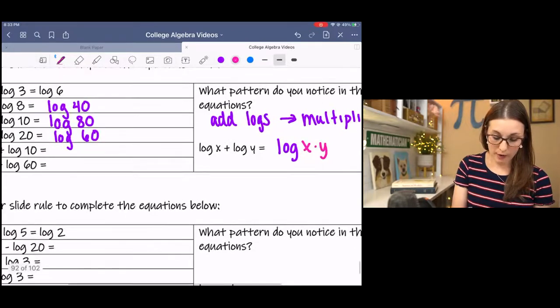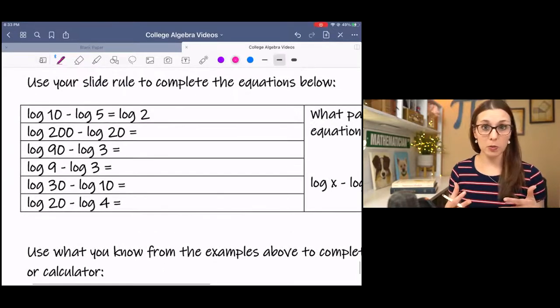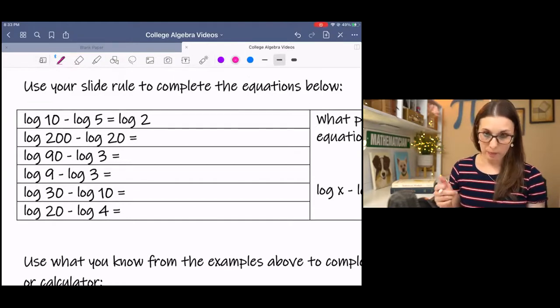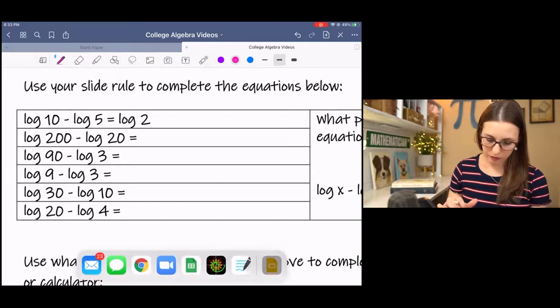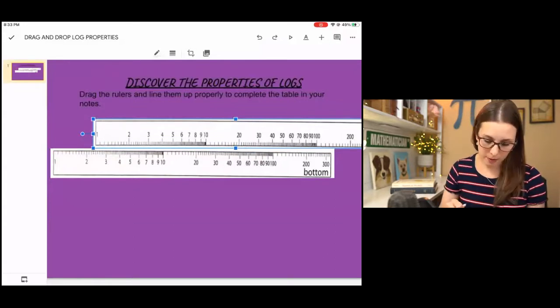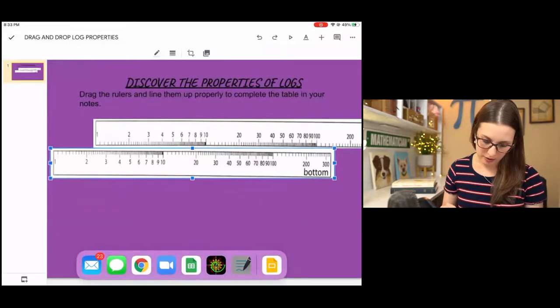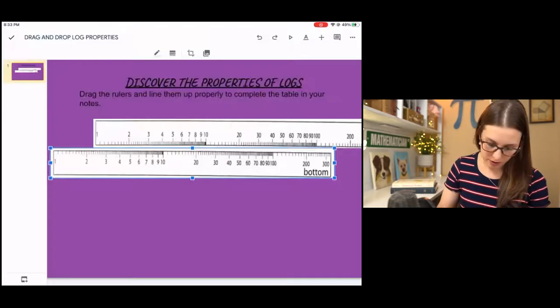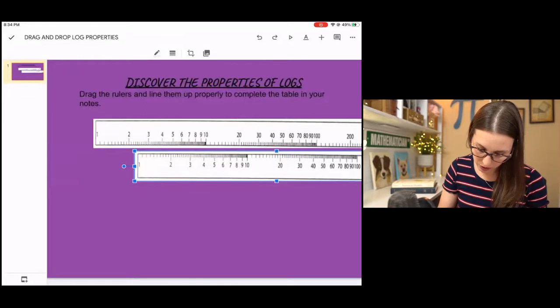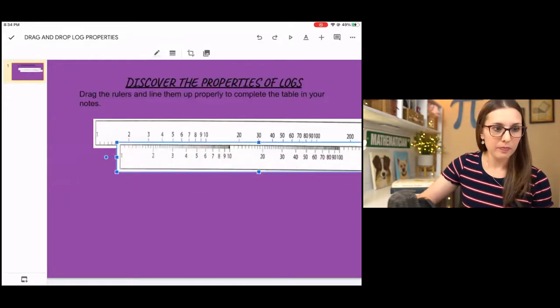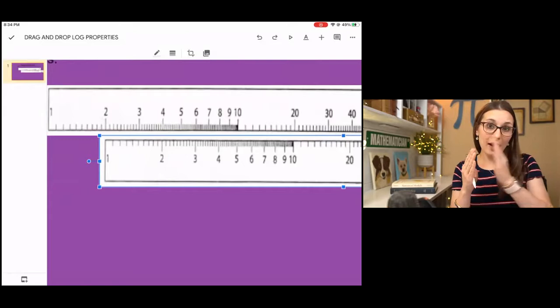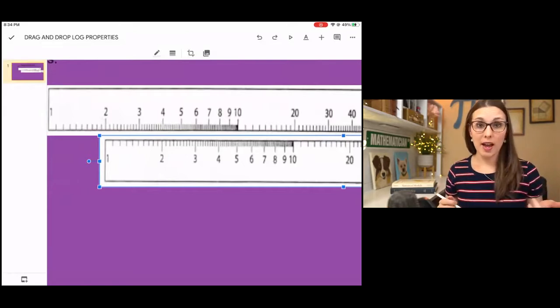Next example, we have subtraction. You might be able to guess, if you know your properties of exponents, what subtraction translates into. But if not, let's look at the slide rules. Log 10 minus log 5. I'm going to move this over because now I'm subtracting, so I'm going to be going the other way. I've lined up the 10, and I'm trying to subtract, so go back 5. That puts me at log 2.